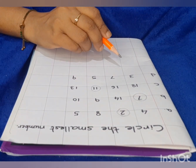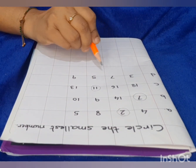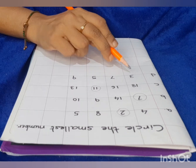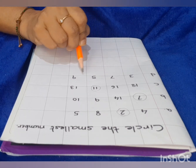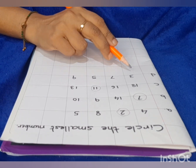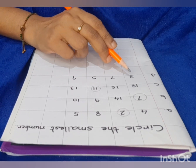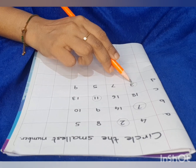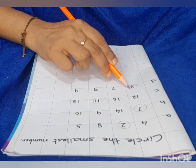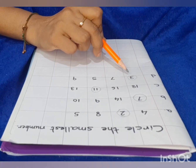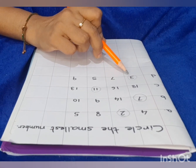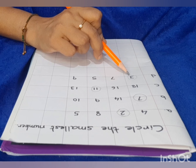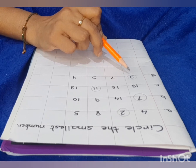Next. Is 1 there? No. Is 2 there? No. Is 3 there? Yes. 3 is the smallest number. The number which comes at first in counting is the smallest number. So make a circle on 3.